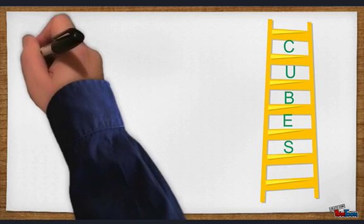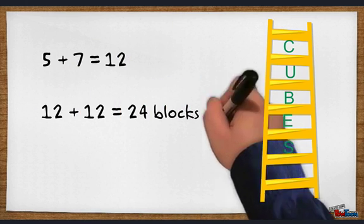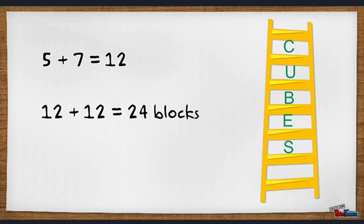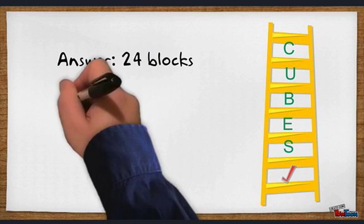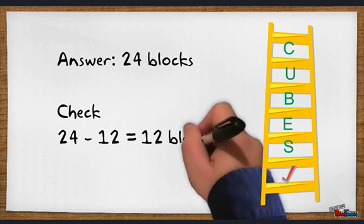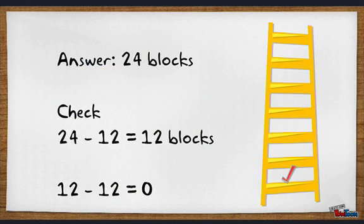Our last step is S for solve and check. So let's solve our problem. We can add twelve plus twelve, which gives us twenty-four. Altogether, she traveled twenty-four blocks in all. Now let's check our answer. The last step asks us to double check our work and to see if our answer makes sense. The answer we got was twenty-four, so let's subtract each number that we have and we should get zero as our answer.